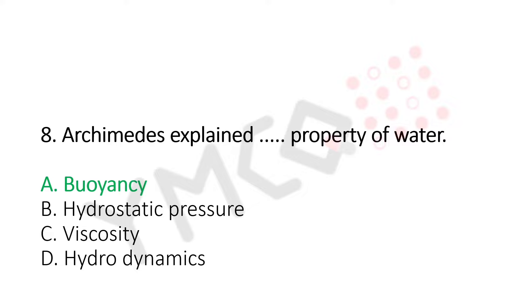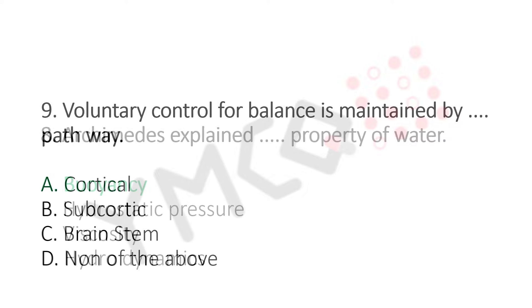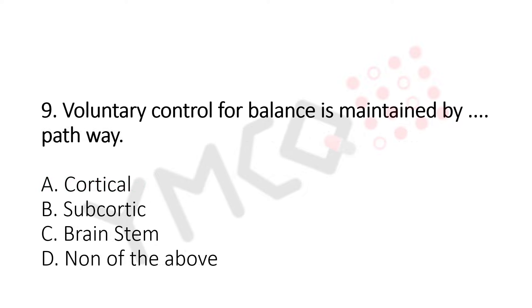Let's move to question number 9. Voluntary control for balance is maintained by which pathway? Option A, cortical. Option B, subcortical. Option C, brainstem. Option D, none of the above. And the answer is Option A, cortical.